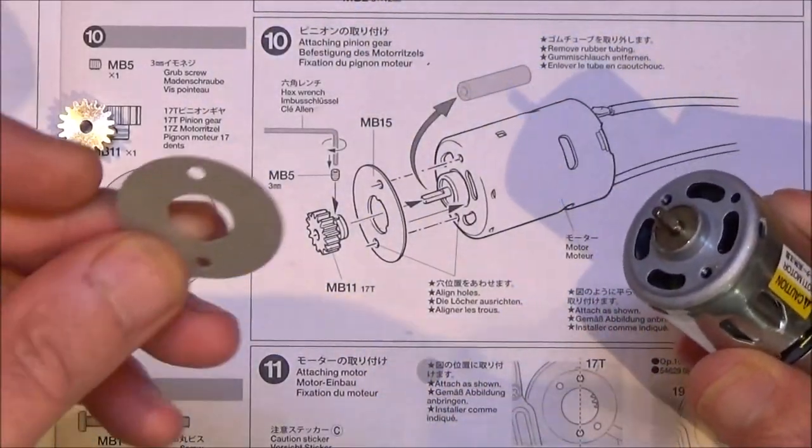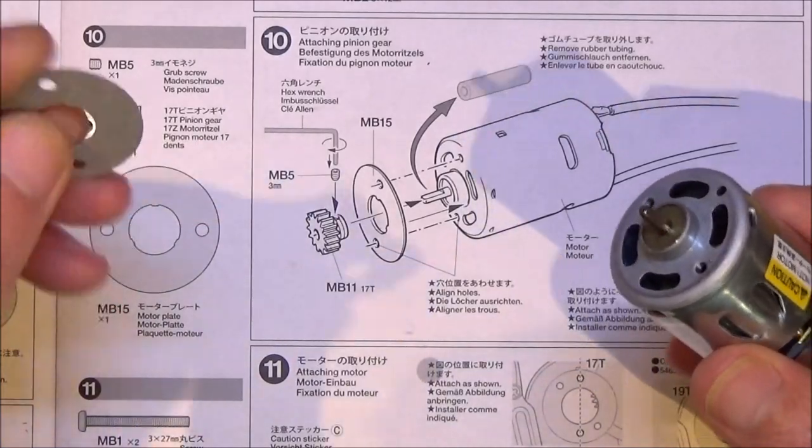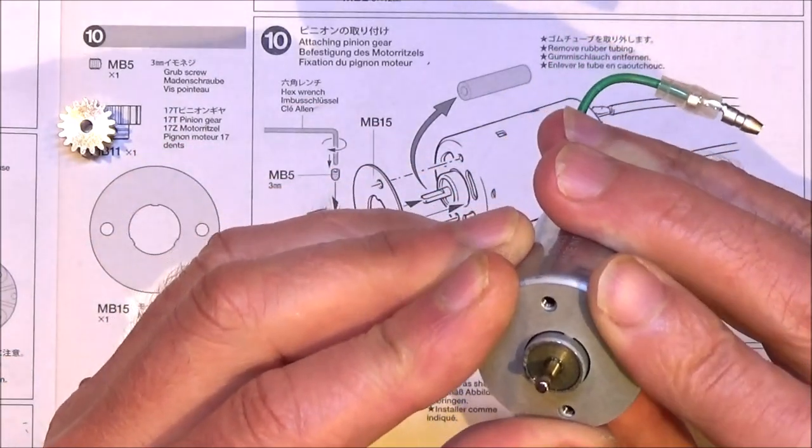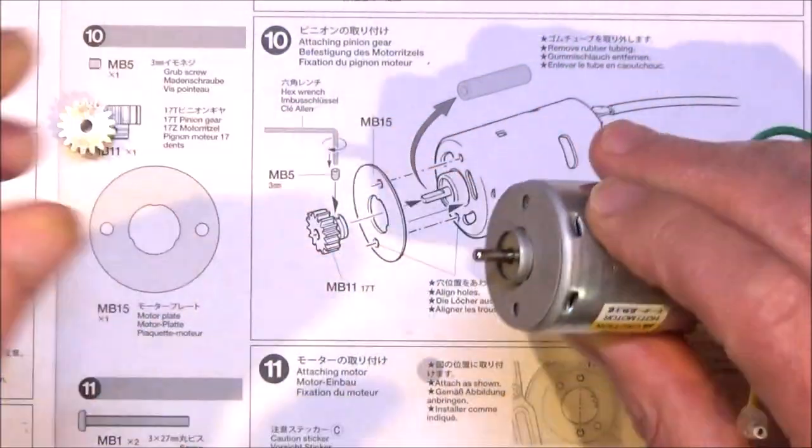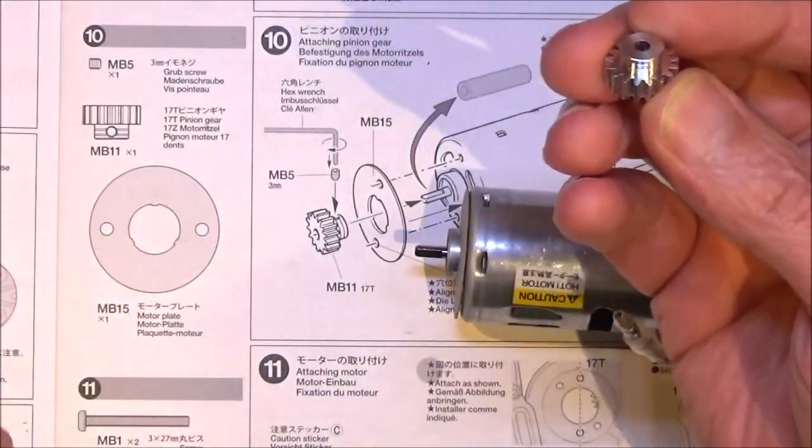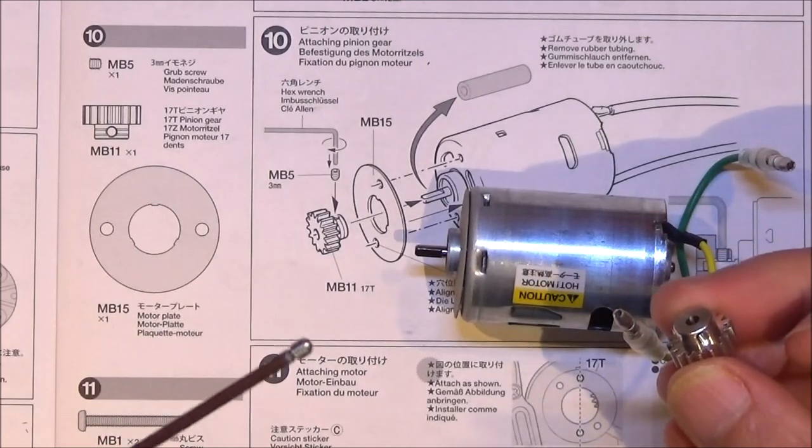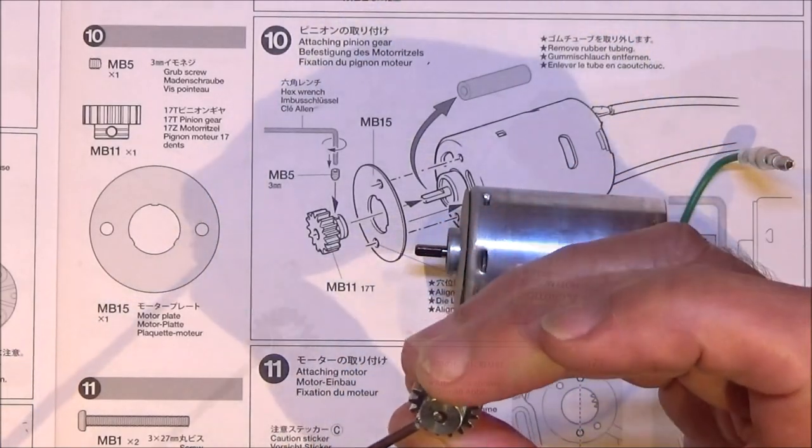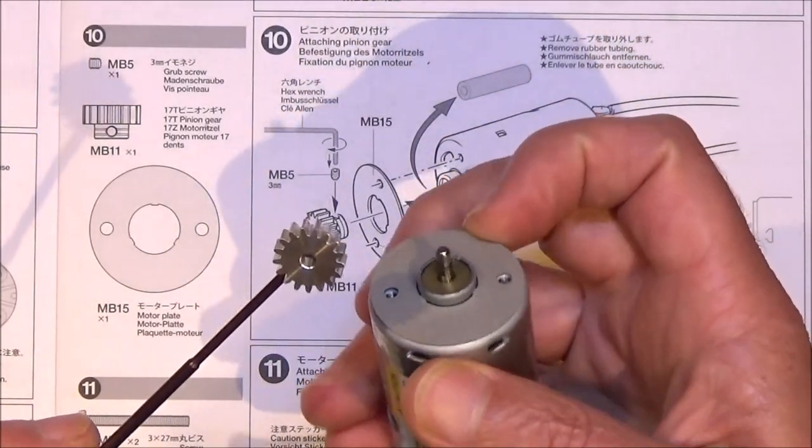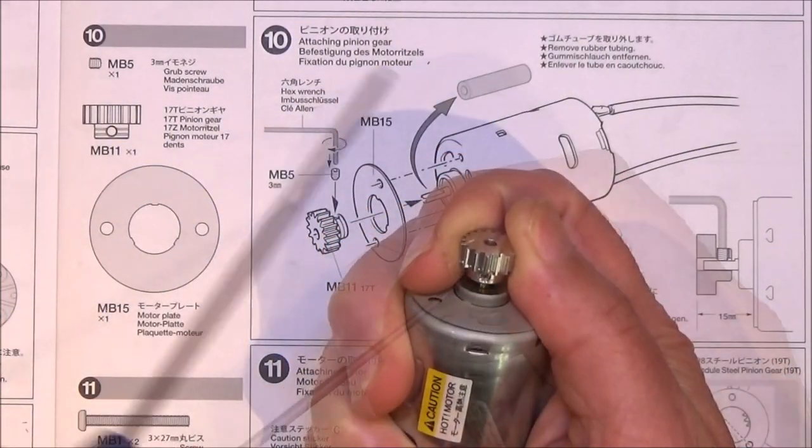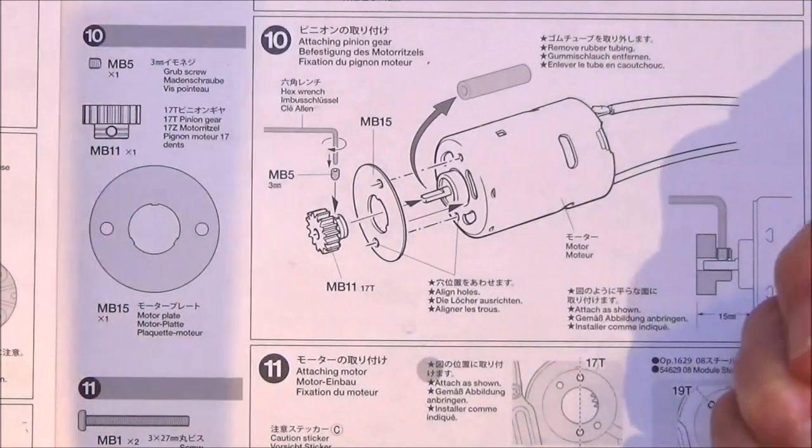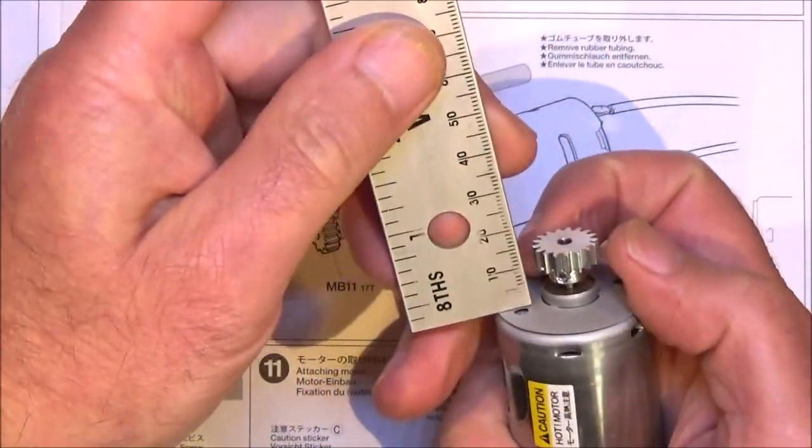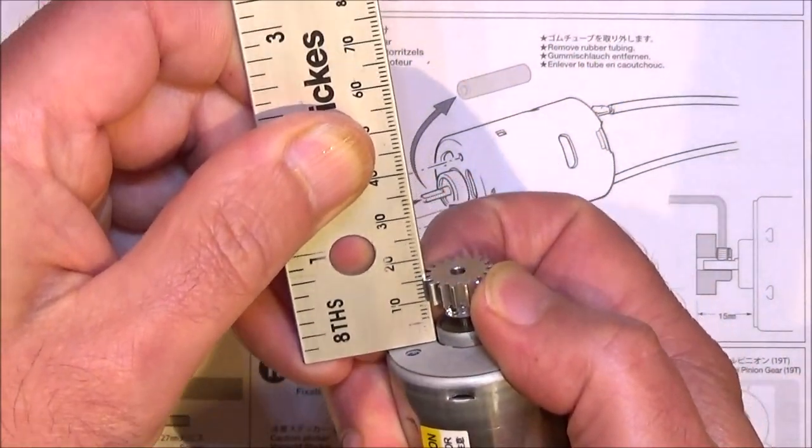For step 10, you're going to need your motor and the motor plate, which is this cardboard type affair. That just needs to clip over like so and line up the holes with the mount holes. Then you need your pinion, 17 tooth supplied, and that tiny little grub screw. Just get that started, and then we're going to place that on the shaft. Don't do it up yet because we need to set this as it shows in the diagram at 15mm away from that motor plate. That looks about right, so just nip that up now.